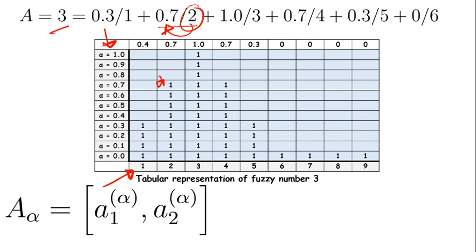In the alpha-cuts technique we need to figure out the intervals for each alpha. For example, when the alpha is 0.3, what would be the starting and ending point? In this case, you can see here the alpha is 0.3; in that case the starting point is 1, which means A1, and A2 is 5.